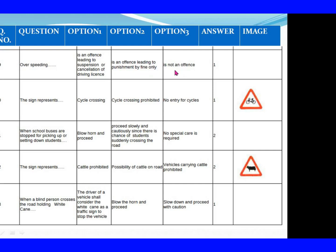Question 110: The sign represents. Option 1: Cycle crossing. Option 2: Cycle crossing prohibited. Option 3: No entry for cycles. The right answer is Option 1: Cycle crossing.